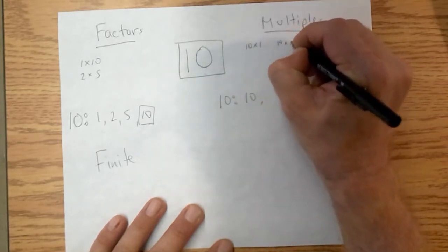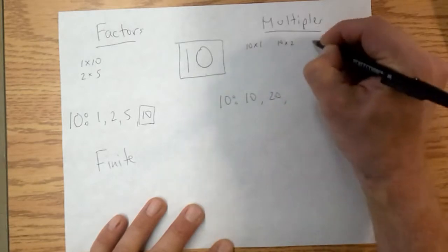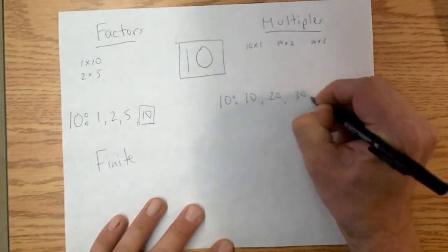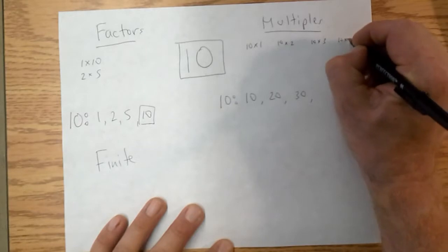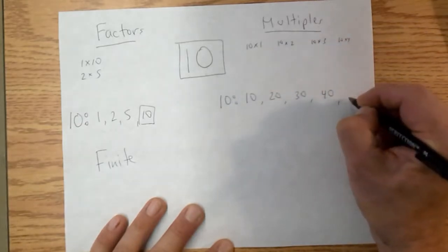Then we would do 10 times 2, so 20. 10 times 3, 30, etc. 10 times 4, 40.